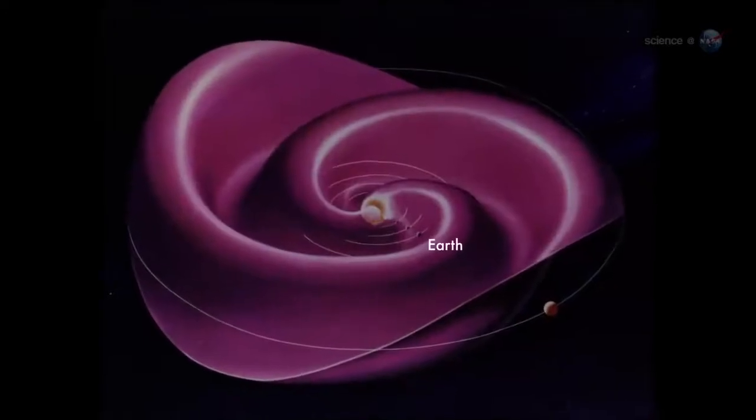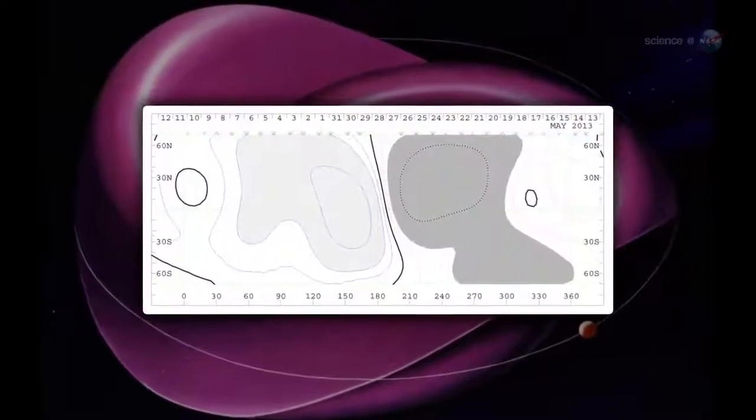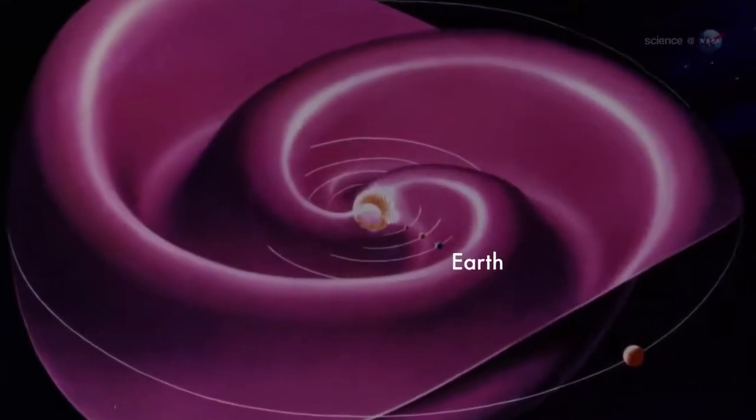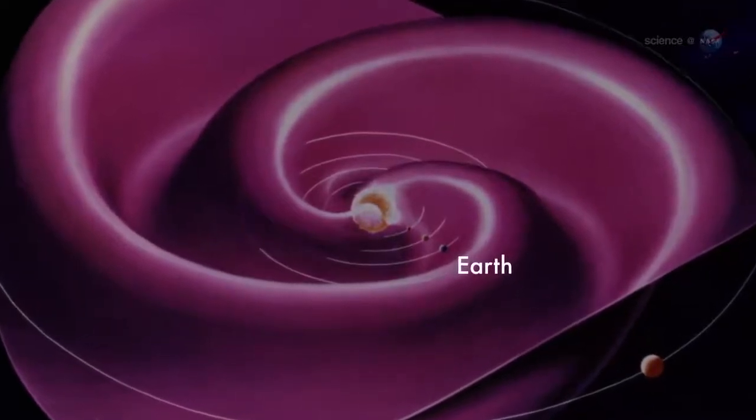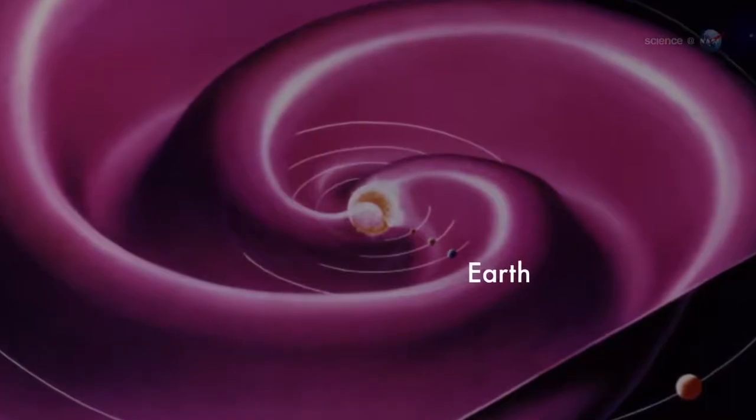During field reversals, the current sheet becomes very wavy. Shearer likens the undulations to the seams on a baseball. As Earth orbits the Sun, we dip in and out of the current sheet. Transitions from one side to another can stir up stormy space weather around our planet.